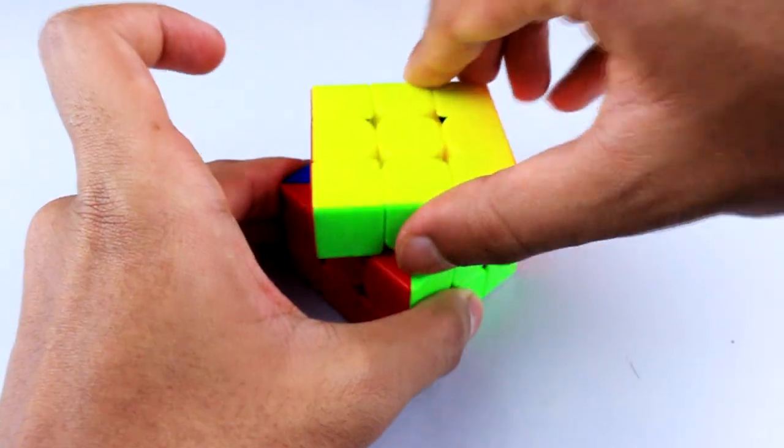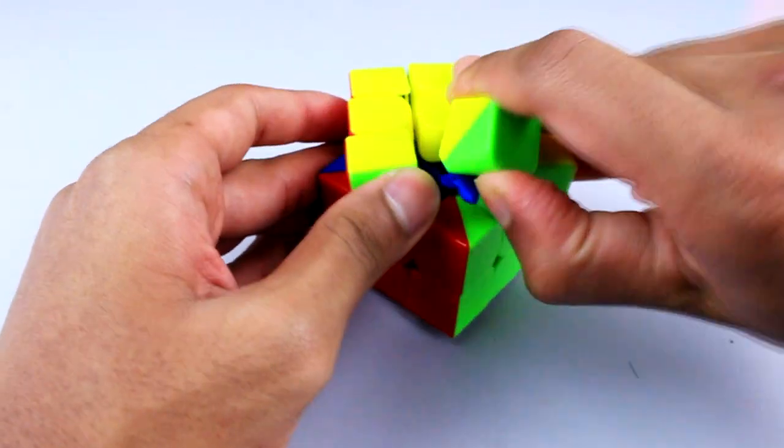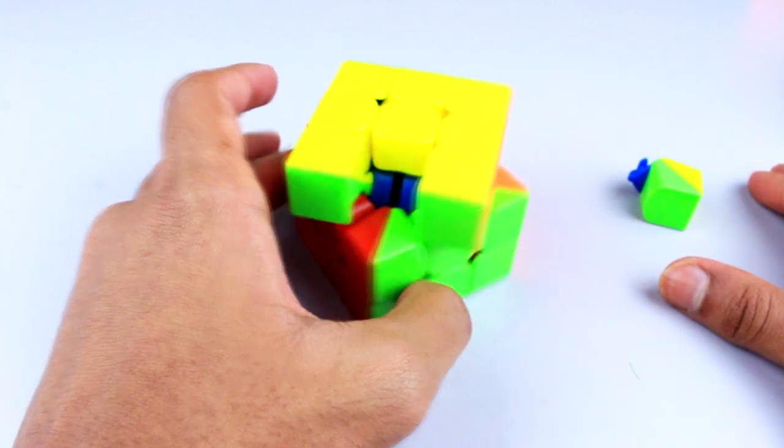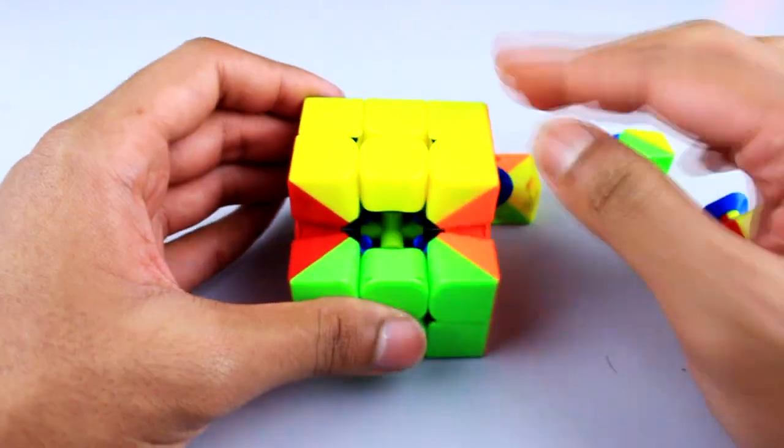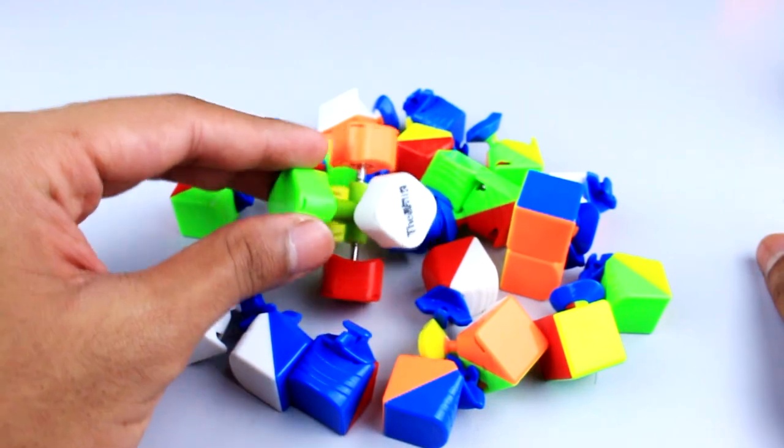Here we have a Weilong 3M. We start by removing the center pieces and take the whole cube apart by turning the top 45 degrees and then removing the edge piece first. After this step, the whole cube will come out easily.